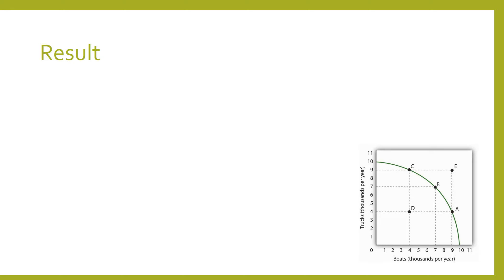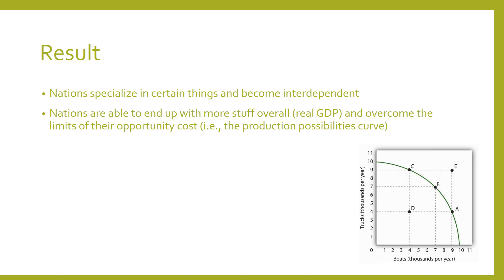The result of this is that nations specialize in certain things and become interdependent. Whatever each nation has the lowest opportunity cost in, they will specialize in that. This allows them to end up with more stuff overall, meaning they increase their real GDP and overcome the limits of their opportunity cost. At the beginning of this course we learned about the PPC curve, which shows the frontier or maximum extent of production of any combination of goods in a two-good economy. If two nations trade and each has a comparative advantage in one good, they can overcome these limits and the total amount of stuff in their economy can end up outside that frontier.